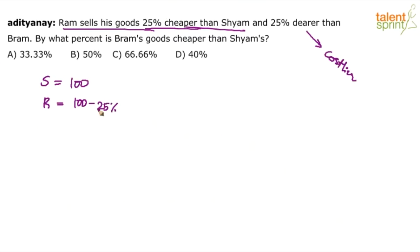He sells 25% cheaper. So 100 minus 25% — 25% of 100 is 25 — so 75 rupees. If Shyam sells for 100 rupees, Ram will sell for 75 rupees.